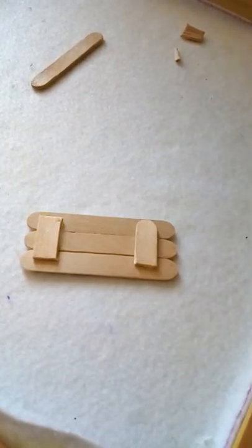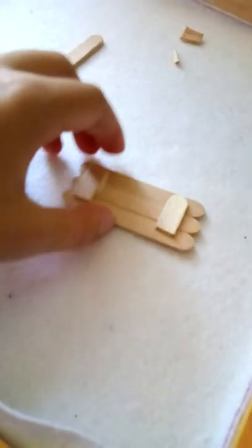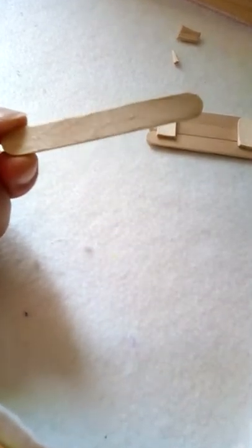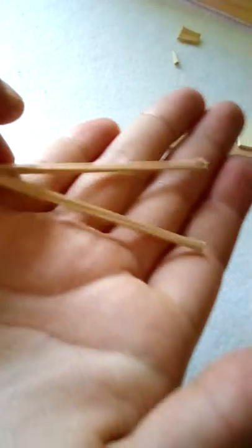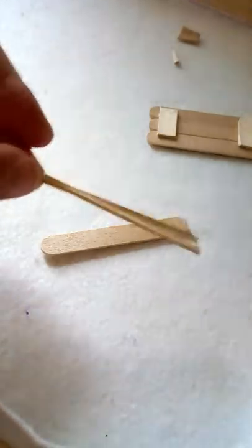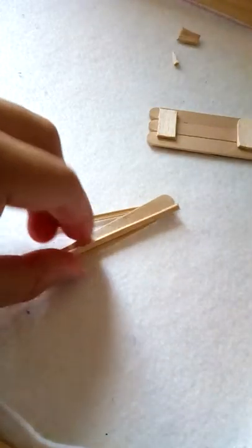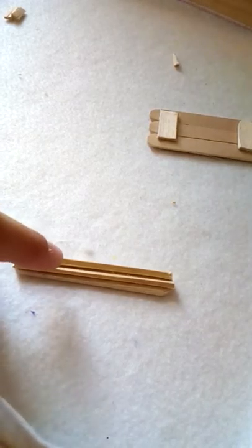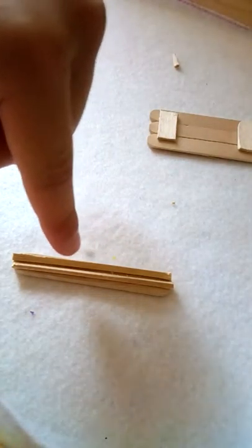Once you've done that, you can put this aside and let it dry. Take one popsicle stick and cut out two of these sticks as long as the popsicle stick. You want to glue the sticks on top of the popsicle stick like this.